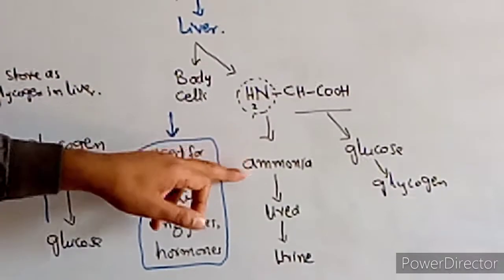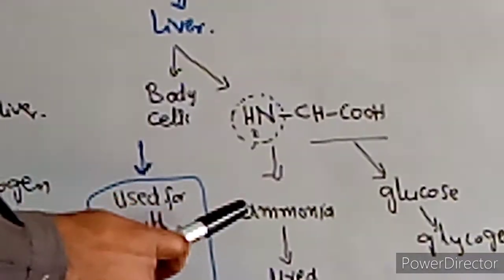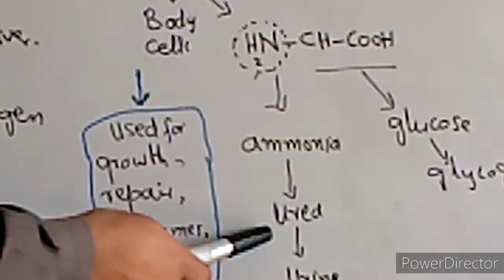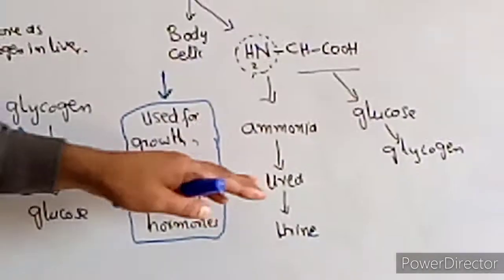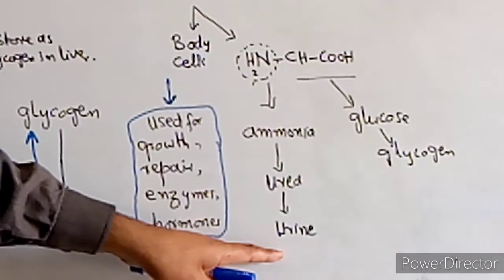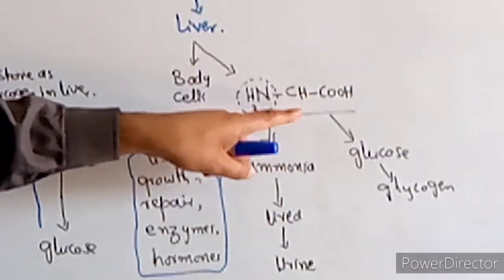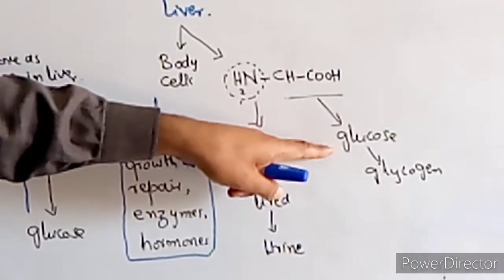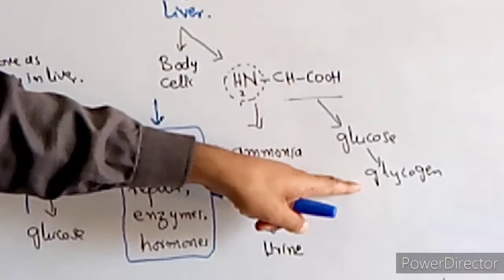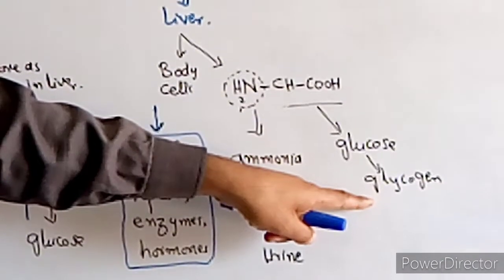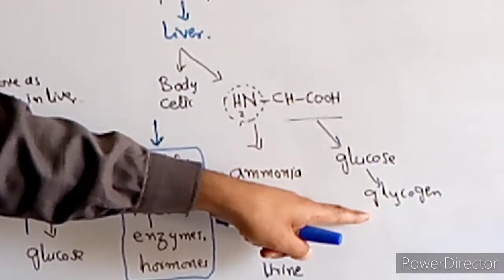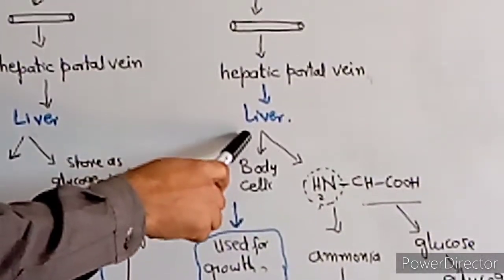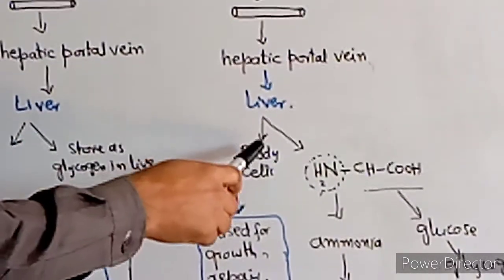The amino acid is converted into a toxic compound, which is then converted into a less toxic compound that can be excreted from the body. The other part — the carbon content of the amino acid — is converted into glucose, then glycogen, and stored in the liver.